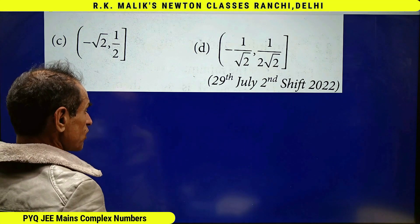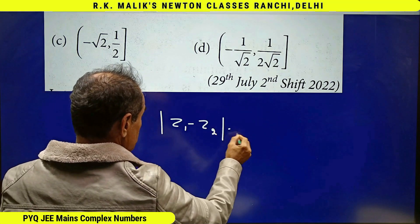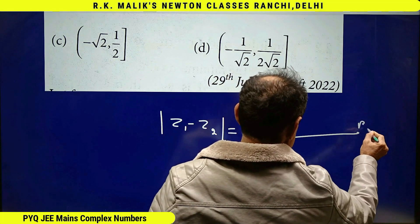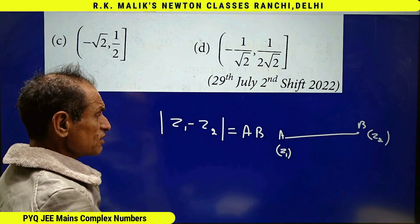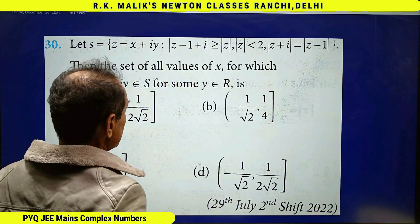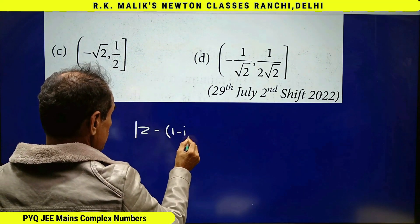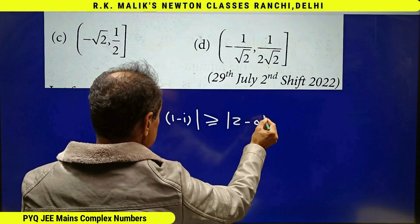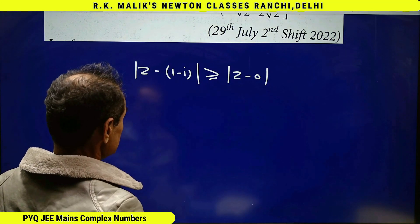To understand the question, you must know the concept that mod of z1 minus z2 represents the distance between two points having complex numbers z1 and z2. The first inequality can be written as mod of z minus (1 minus i) is greater than or equal to mod of z minus 0. That is, the distance of z from (1 minus i) is greater than or equal to the distance of z from 0.